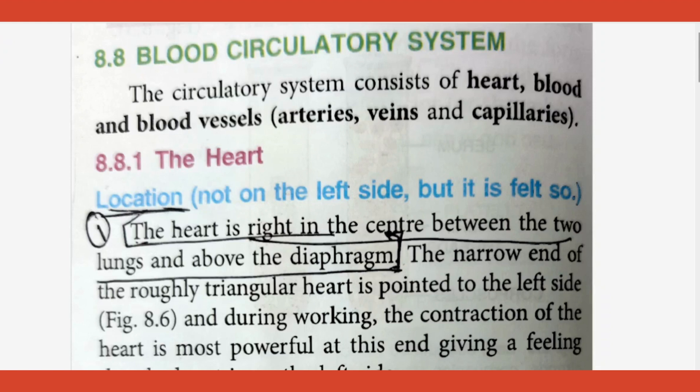In the circulatory system, there is a heart which is just a pump that does not produce any cells or anything except pressure in the blood. Its only function is to create pressure in the flowing fluid called blood. If there is pressure, only then the blood can continue to move throughout the blood vessels of your body. We will be learning about that pump — the heart. Other than that, we should also learn about blood vessels, which we will do in another video.